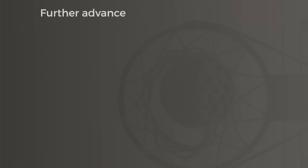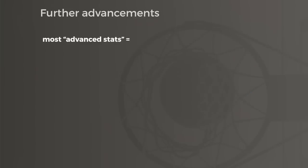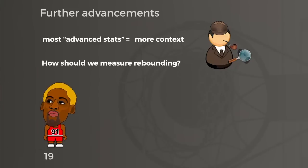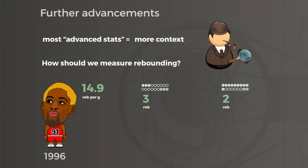Most advancements in basketball stats have followed these same principles: how can we apply more context to better answer questions we're interested in? For instance, how good is someone at rebounding? We could look at rebounds per game, but we already know that doesn't account for minutes played or pace of the game.